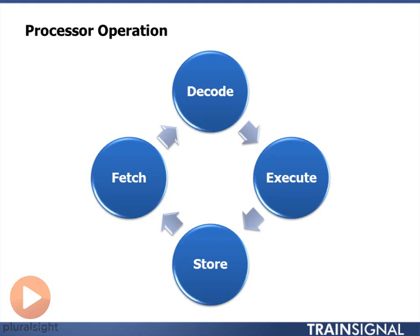This cycle starts with something called fetch. The fetch part of the cycle is where the processor fetches or gets data — specifically pulling that data from something called the external data bus. We already learned what a bus was in the motherboards lesson, so the external data bus is simply where information travels in and out of the processor.